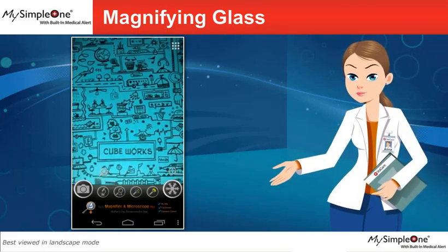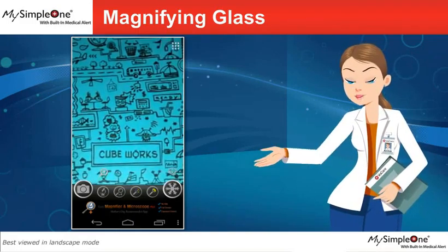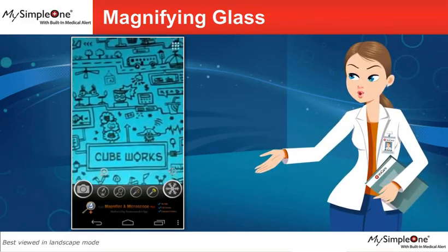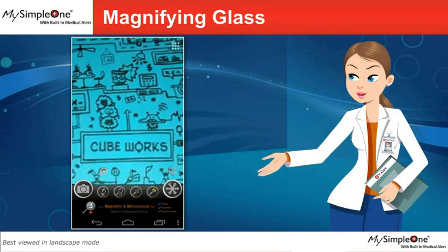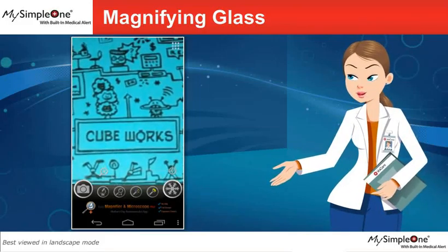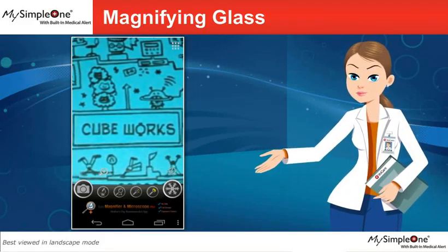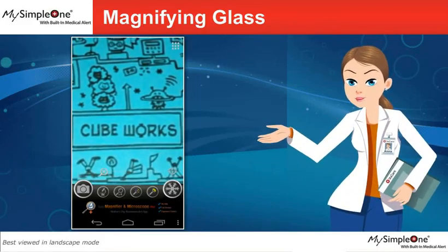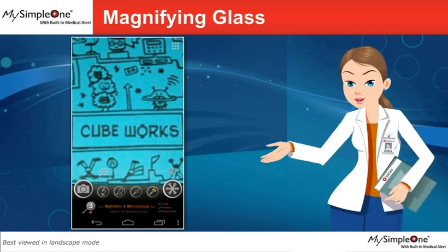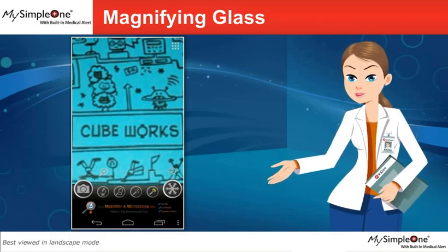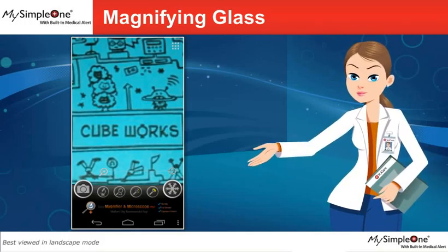Point your phone camera on any object, text, document, etc. you wish to view, and you can see it in a magnified view.